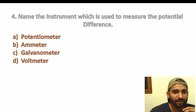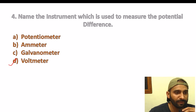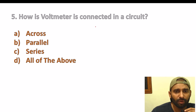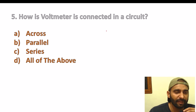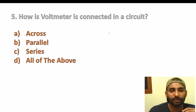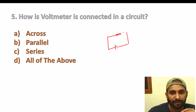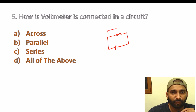Then fourth question: name the instrument used to measure potential difference — that is a voltmeter. How is the voltmeter connected in a circuit? Students, this is asked very often. Let me show you through a diagram: there is a circuit, a cell, and here there is a resistance. The voltmeter is connected in parallel with the resistance.